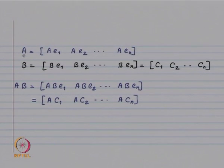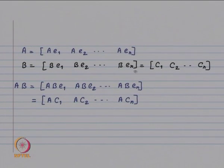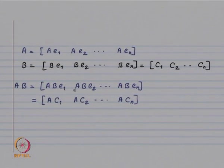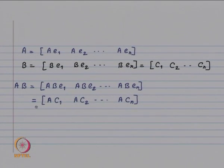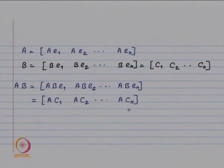The n columns of matrix A are given by Ae_1, Ae_2, ..., Ae_n. For another matrix B with columns c_1, c_2, ..., c_n, the matrix product AB has columns Ac_1, Ac_2, ..., Ac_n. So the first column of AB is A times the first column of B, the second column is A times the second column of B, and so on.